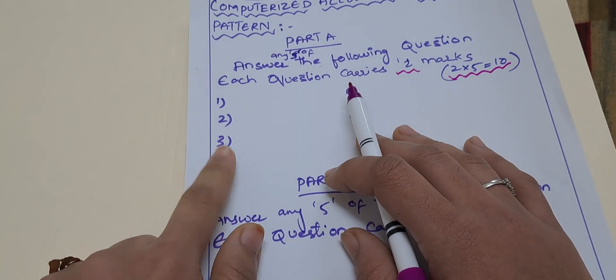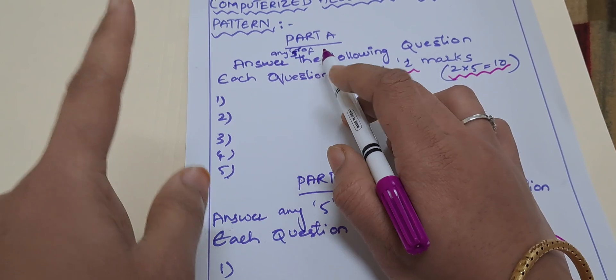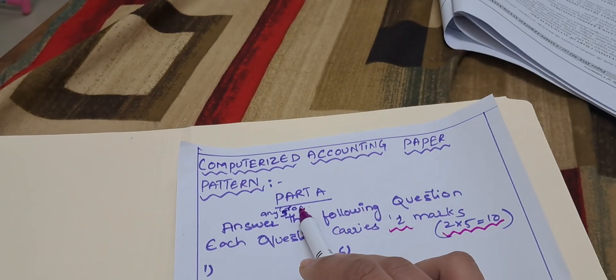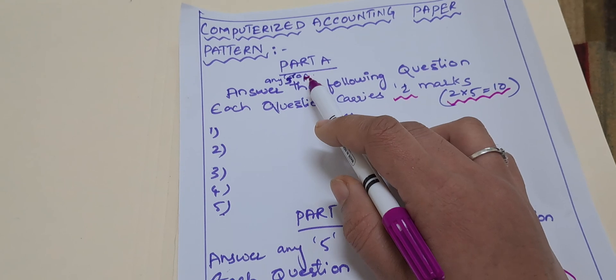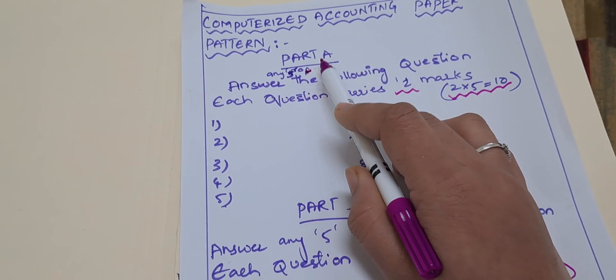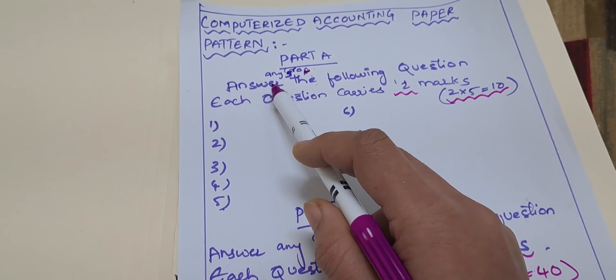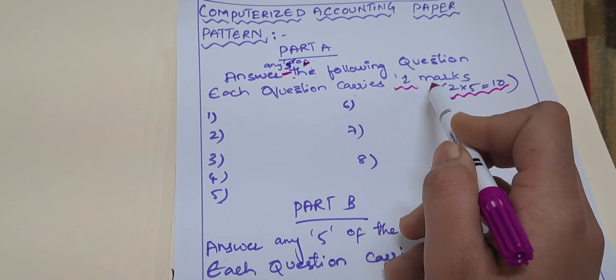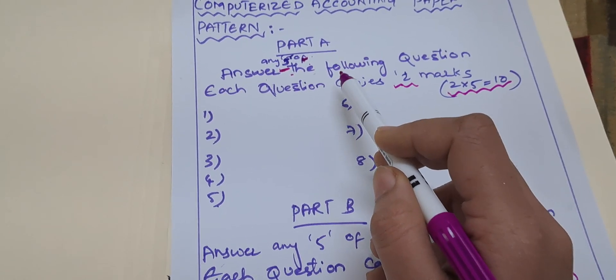Let's start our topic. In Part A of computerized accounting we have different kinds of questions. In Part A, you will have two-mark questions. The instruction will say: 'Answer any five of the following questions, each question carries two marks.'